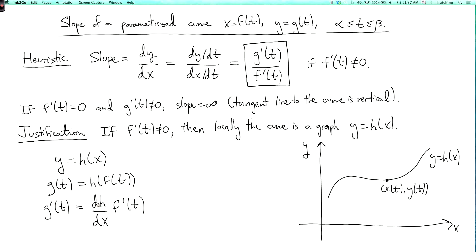And I can also think of h as being y. So this dx over here, this is the slope. It's the slope of the graph, so it's the slope of the tangent line to the graph at this point. And so I can solve this equation by dividing both sides by f prime of t to get that the slope equals g prime of t over f prime of t.